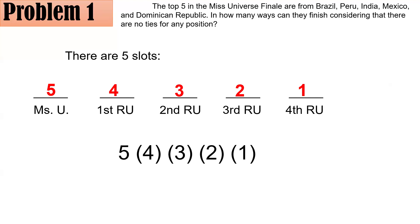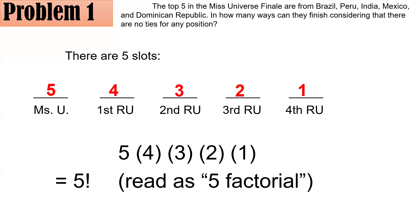Since you are multiplying whole numbers from five all the way down to one, this is five factorial. The exclamation point is read as factorial — the factorial of a whole number n means you multiply all whole numbers from n down to one. So this is 5 × 4 × 3 × 2 × 1, or five factorial, which equals 120. There are 120 ways for them to finish the pageant without any ties.